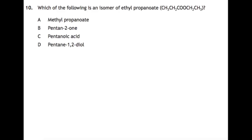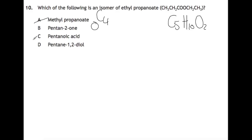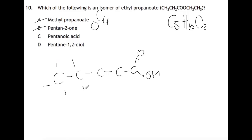Which of the following is an isomer of ethyl propanoate? First, check how many carbons, hydrogens, and oxygens you have and only focus on those in the structures given. Ethyl propanoate is C5H10O2. Methyl propanoate is only C4, so we can ignore that. Pentan-2-one only has one oxygen, so we can ignore that too. Drawing out pentanoic acid and counting the hydrogens: 1,2,3,4,5,6,7,8,9,10 — giving C5H10O2. So C must be our answer.